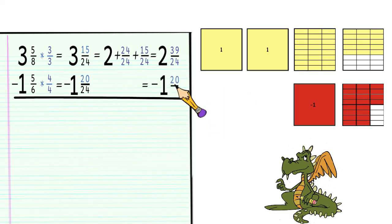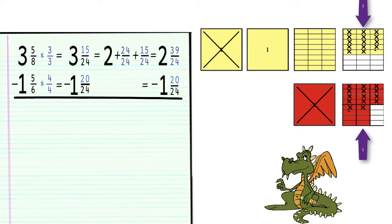Now we've got that done, we can subtract. With the tiles, we remove or cross out what we have taken away, which is being represented by the red tiles.